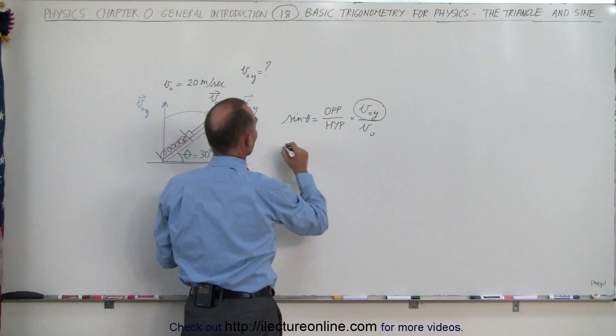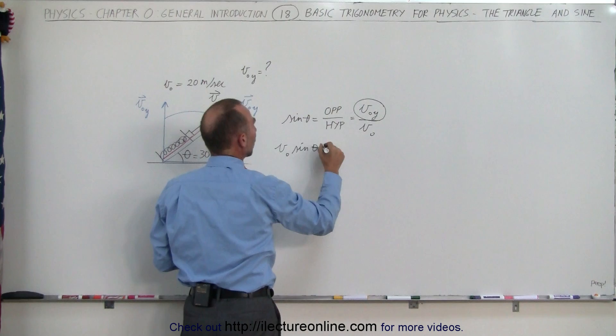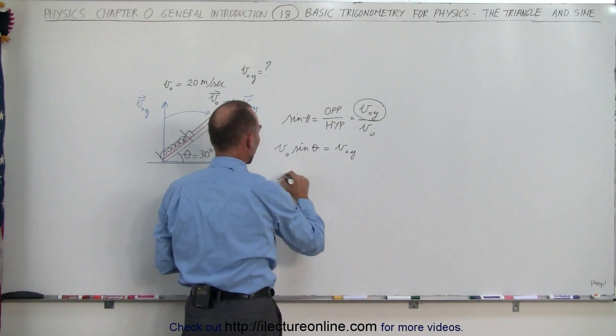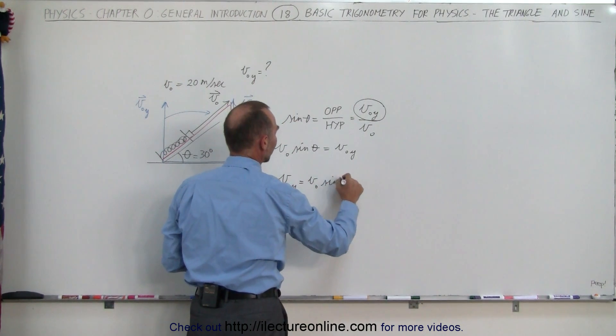So in this case, we can then say that v sub nought times the sine of theta by moving the v sub nought over here will be equal to the v sub nought in the y direction. Turning the equation around, we have v sub nought in the y direction equals v sub nought times the sine of theta.